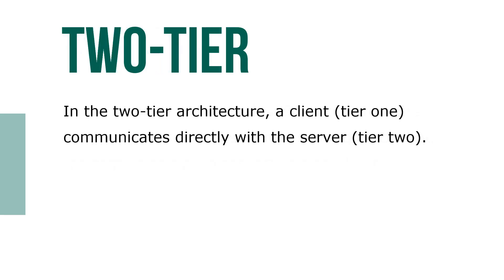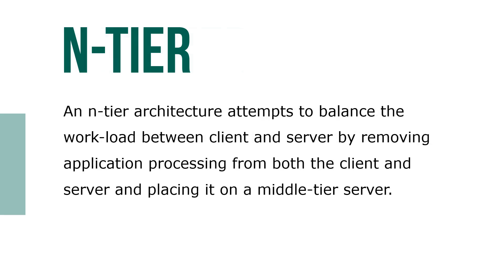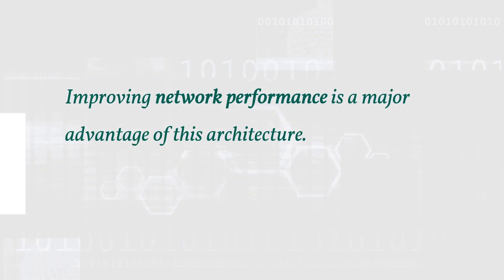In two-tier architecture, a client (tier one) communicates directly with the server (tier two). An N-tier architecture attempts to balance the workload between client and server by removing application processing from both and placing it on a middle-tier server, with improving network performance being a major advantage of this architecture.